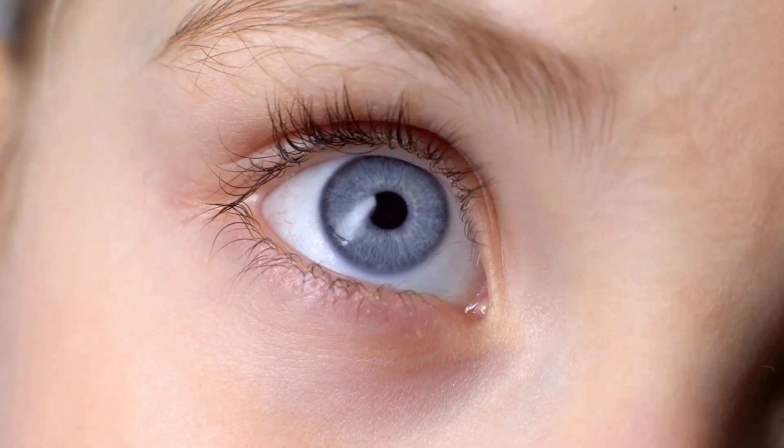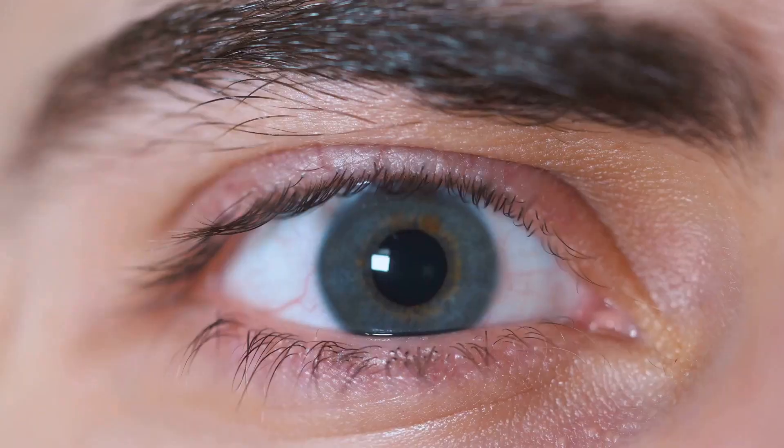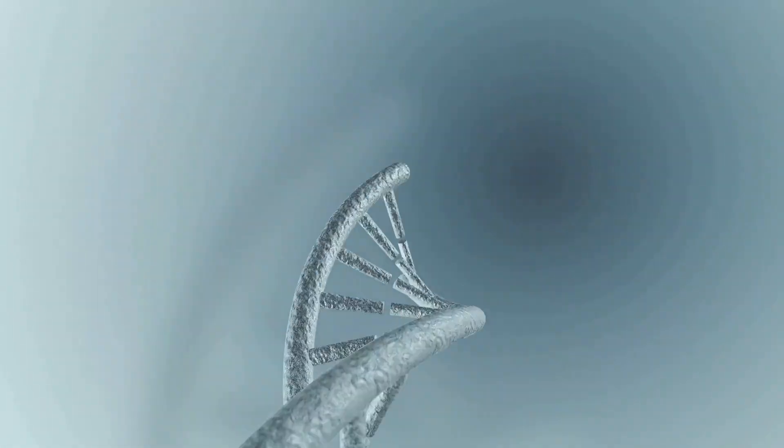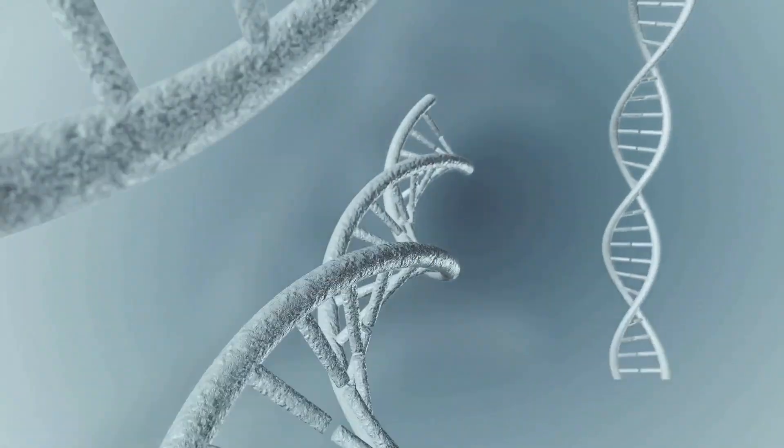Genes, tiny segments of DNA, carry instructions that dictate physical traits like hair color, and can influence the risk of developing certain health conditions. But what happens when these genes go awry?